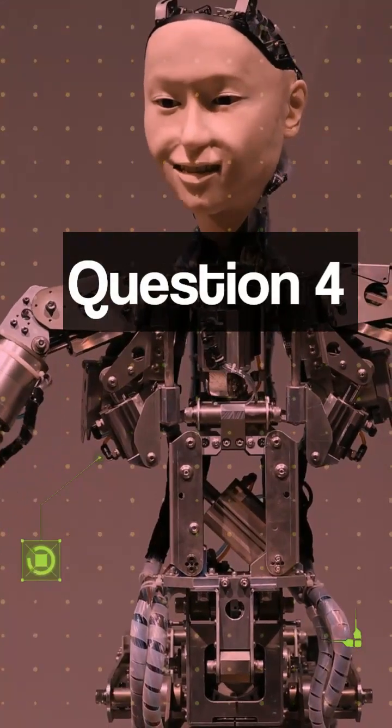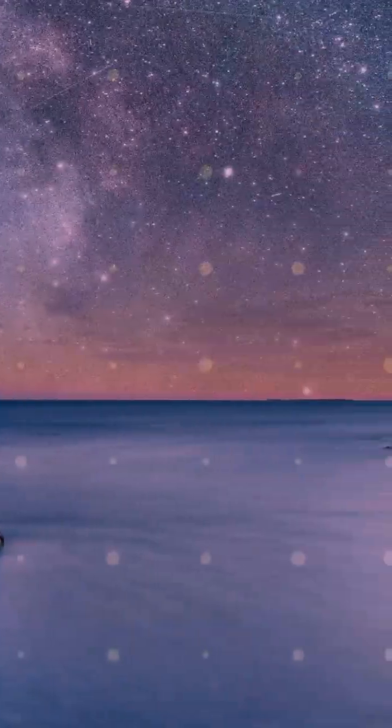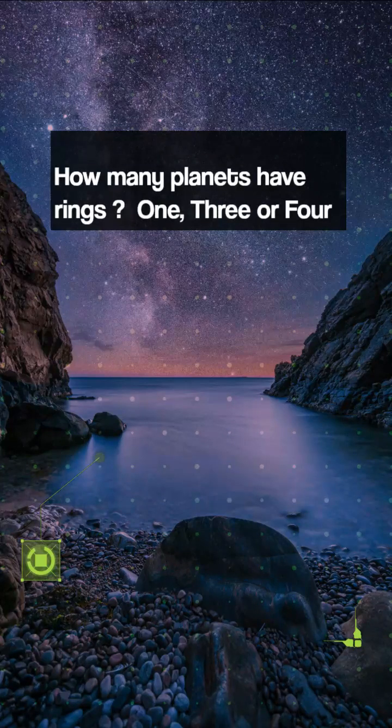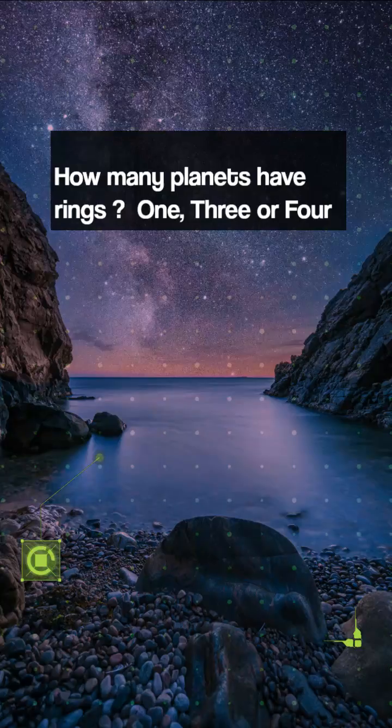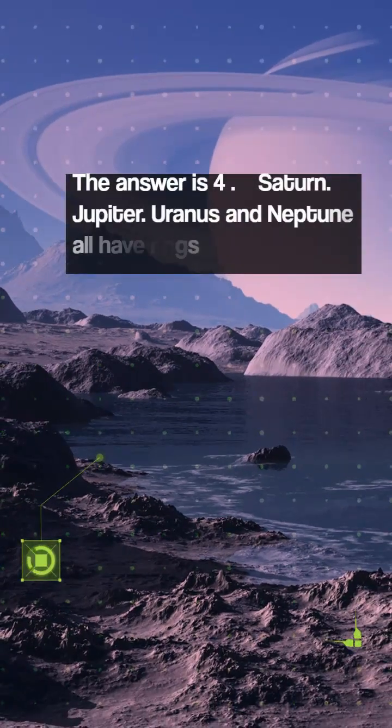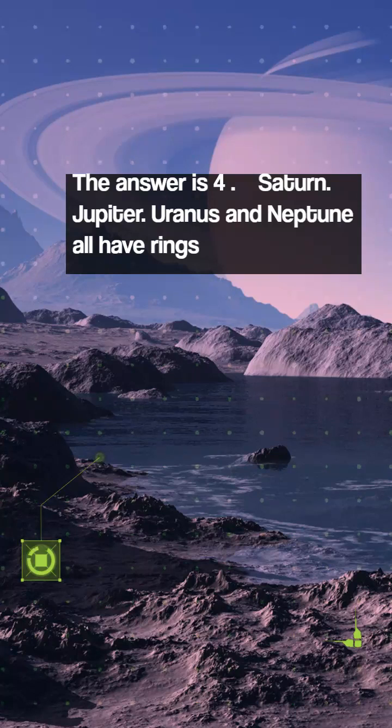Question 4. How many planets have rings? 1, 3 or 4? The answer is 4. Saturn, Jupiter, Uranus and Neptune all have rings.